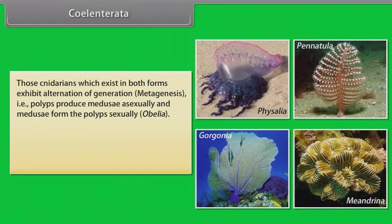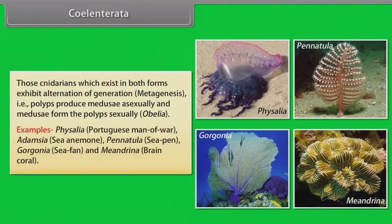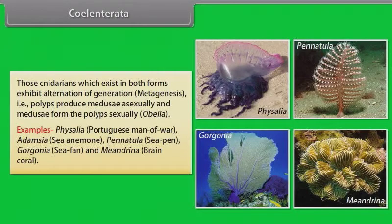Examples of Cnidarians include: Physalia, also known as Portuguese man-of-war; Adamsia, also known as sea anemone; Pennatula, also known as sea pen; Gorgonia, also known as sea fan; and Meandrina, also known as brain coral.